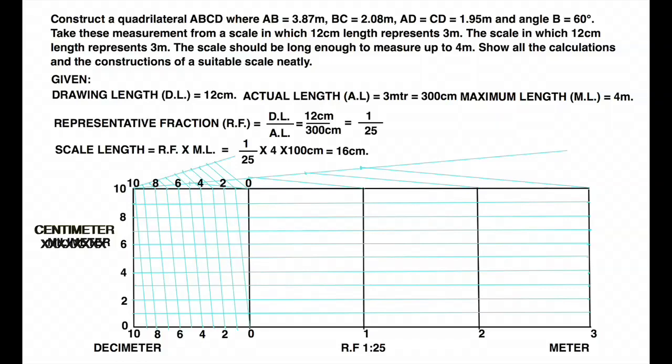Now we need to mark dimensions 3.87 meter. So we will take 3 meter, 8 decimeter and the line joining 8 to 9. On that I will go 7 points up. So I will get point A. So A to B is 3.87 meter.